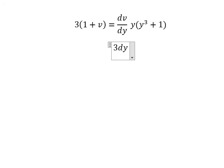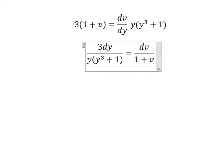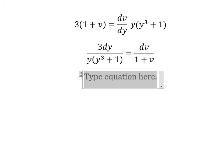3 dy over y times y to the power of 3 plus 1 equals dv over 1 plus v. Next, we put the integration on both sides.